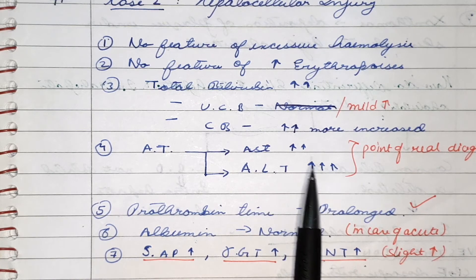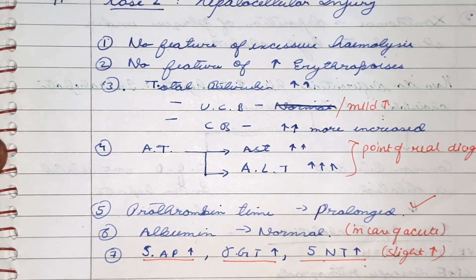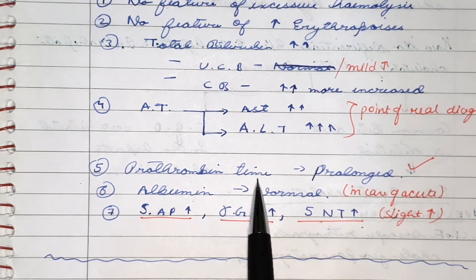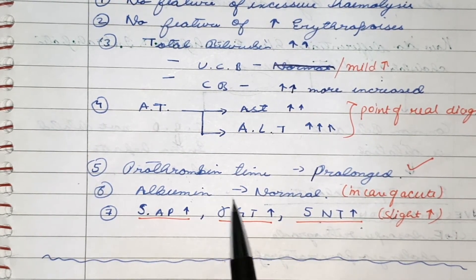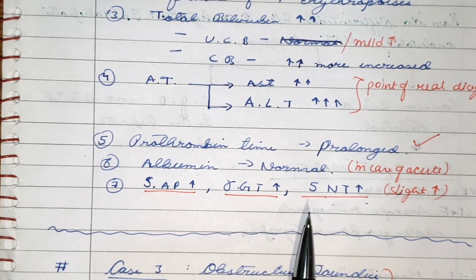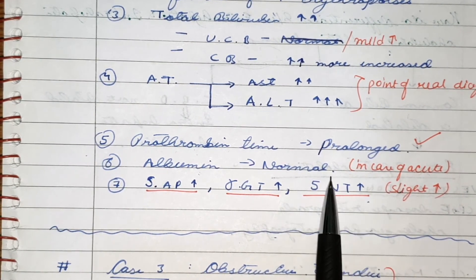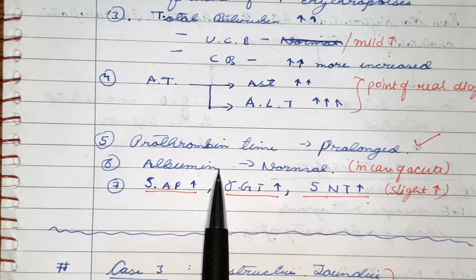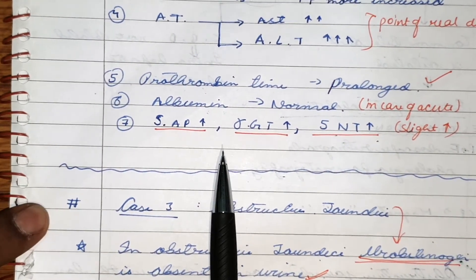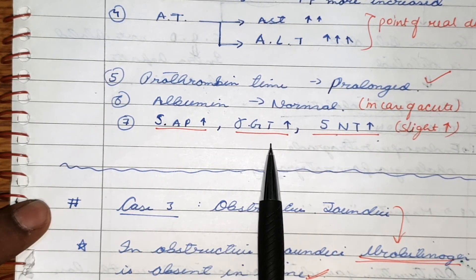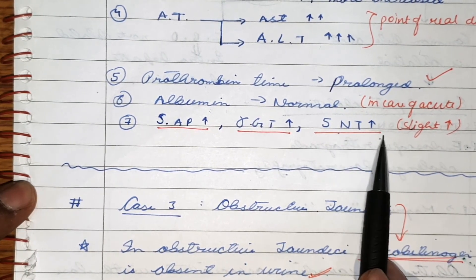AST and ALT are highly increased — these are the main markers of hepatocellular injury. Prothrombin time is prolonged because the liver is unable to form all four clotting factors properly, resulting in decreased clotting. Albumin is normal in acute hepatocellular injury because of its half-life of 25 days, so normal albumin levels will be seen for at least 25 days. There is a slight increase in alkaline phosphatase, gamma-glutamyl transferase, and 5-nucleotidase because of minor blockage of bile canaliculae inside the liver.